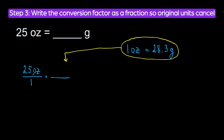Our original units, ounces, are on top in the numerator. So, we will write ounces in the denominator on the bottom so they will cancel out, and we will write grams in the numerator on top. We can see ounces cancel out and we are left with grams. Now, let's plug in the numbers from our conversion factor: 28.3 grams will go on top and 1 ounce on the bottom.